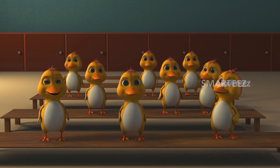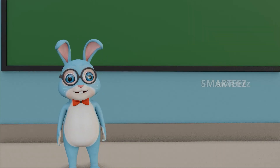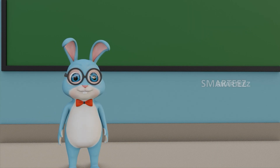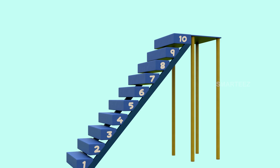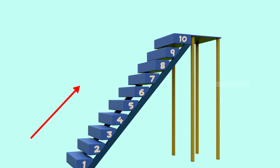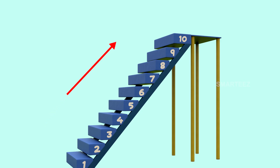Mr. Hopster, welcome everybody. Take a look at these stairs. The numbers go from 1, 2, 3, 4, 5, 6, 7, 8, 9, and 10. A number that is higher on the stairs is called greater than the number that is lower on the stairs.